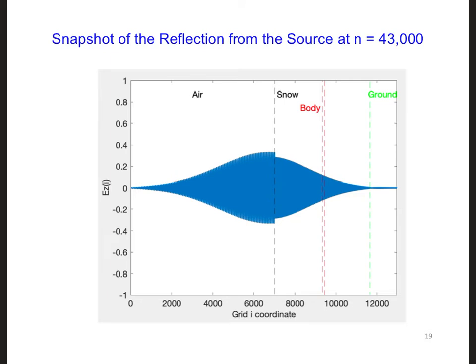When you ran your simulation, you may have seen a wave propagating to the right. Once it reached the snow's surface, you probably saw a reflection, and another reflection was generated at the surface of the ground since we don't have the body. Both reflections then propagated to the left.